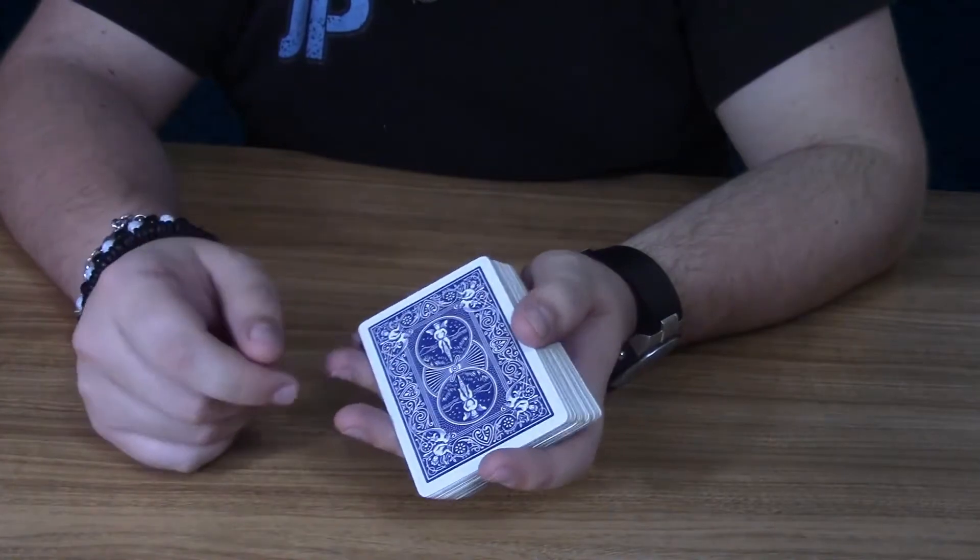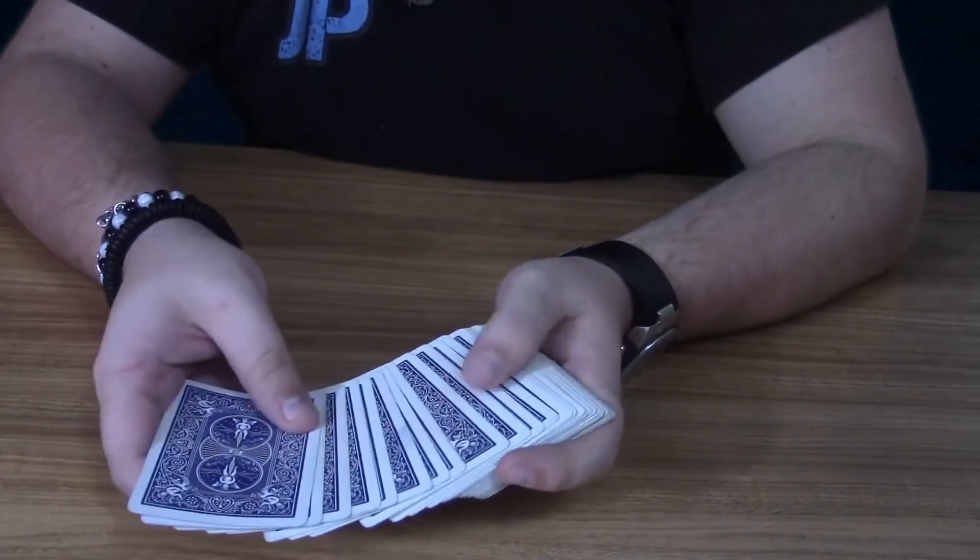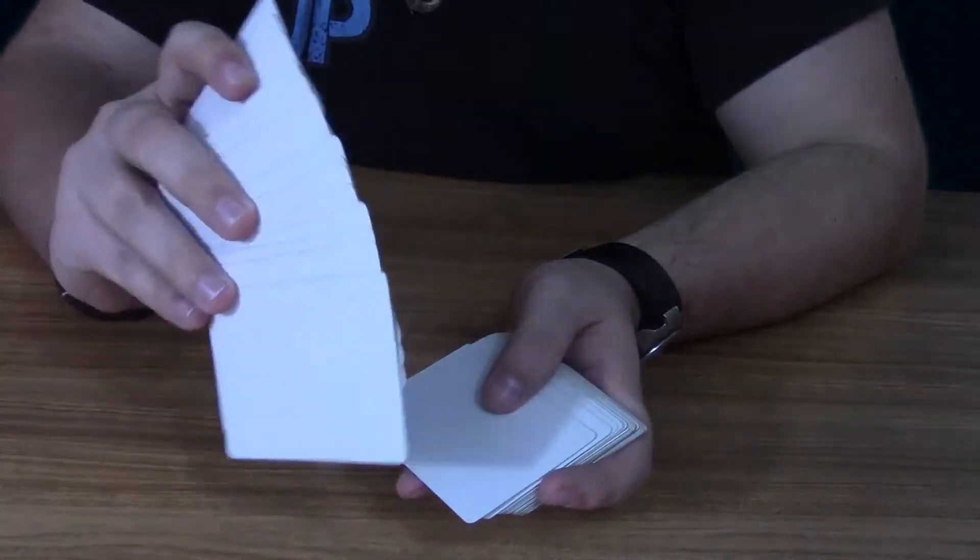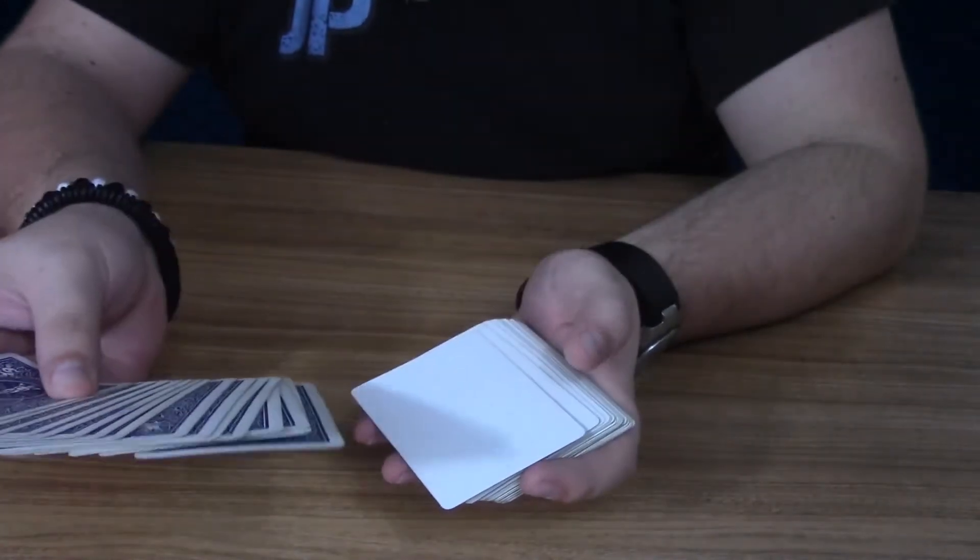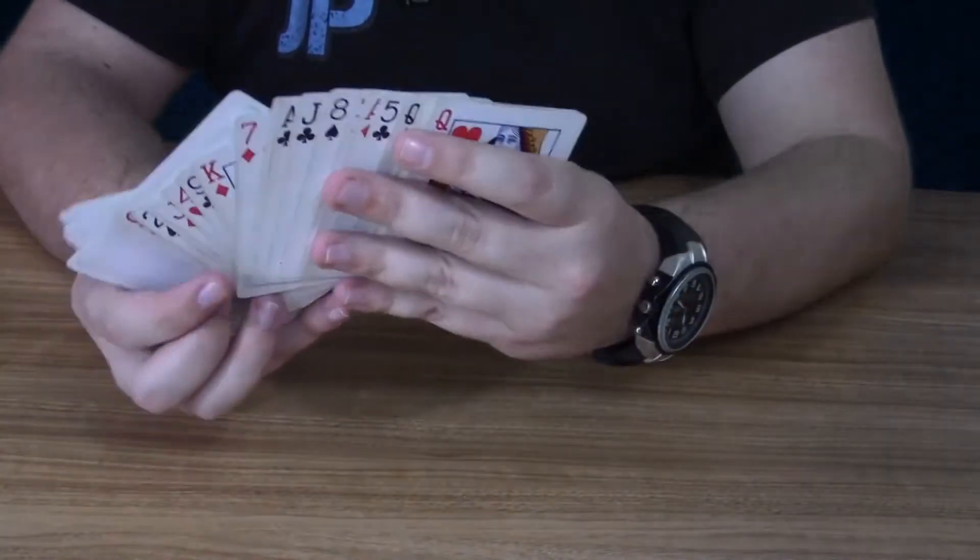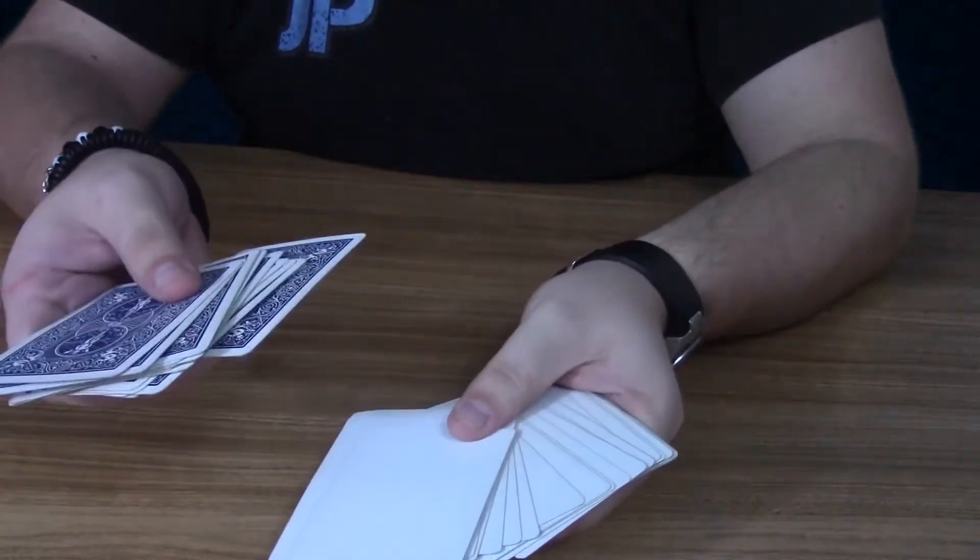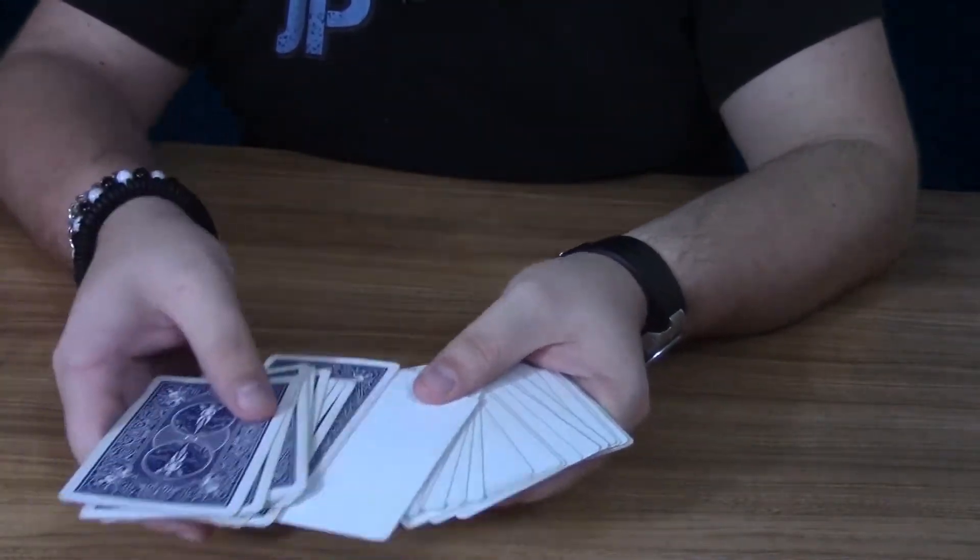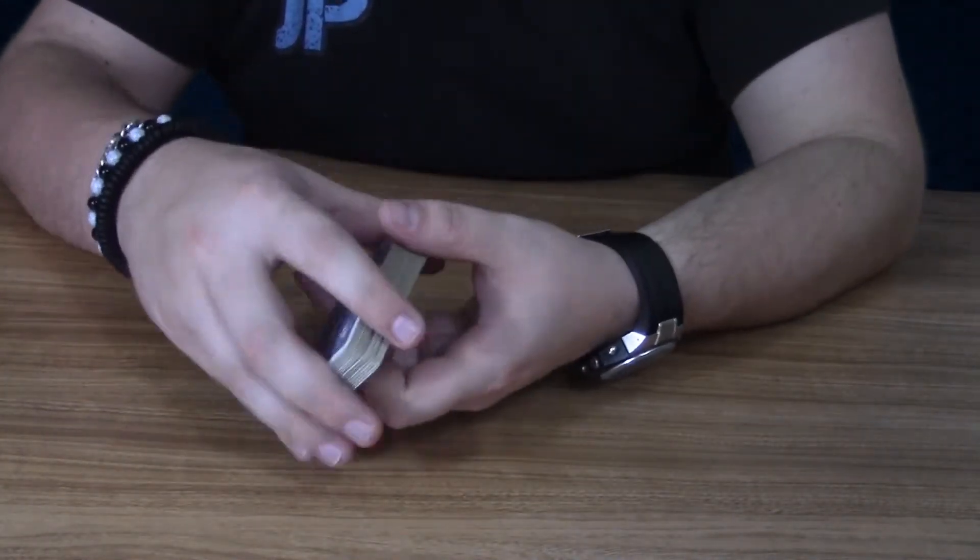So what's really cool about these cards is every card that has a back to them do not have a face. They're blank on the face. And all the cards that do not have a back have a face. So you're just going to put the cards with the back on top and set it up like a normal deck of cards would be.